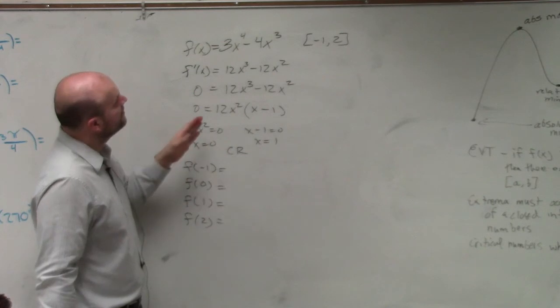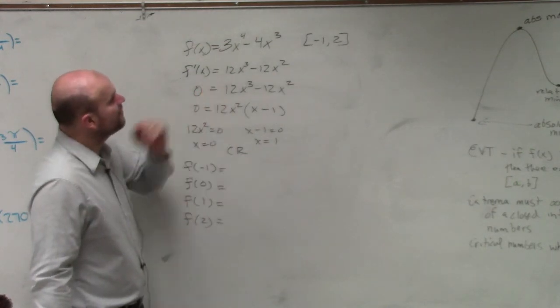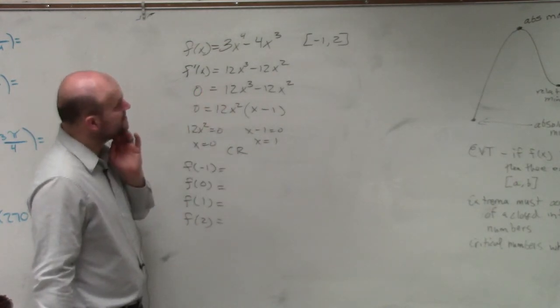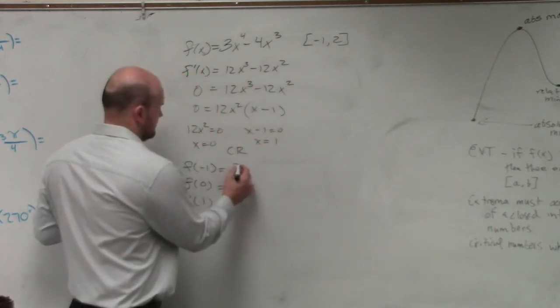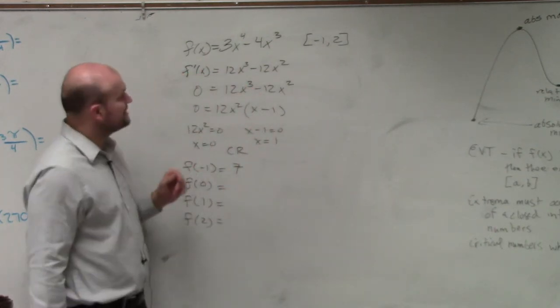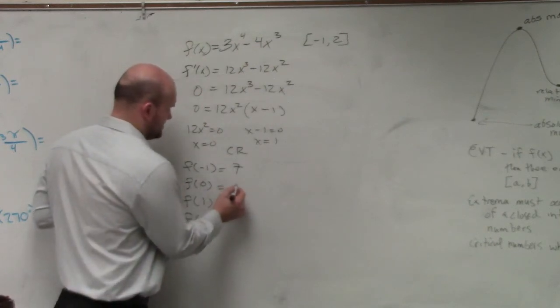And that's going to be a negative. Negative 4 times negative 1 is going to be a positive 4. So I remember getting 7. Yeah, I did get 7. f of 0 is obviously going to give you 0.